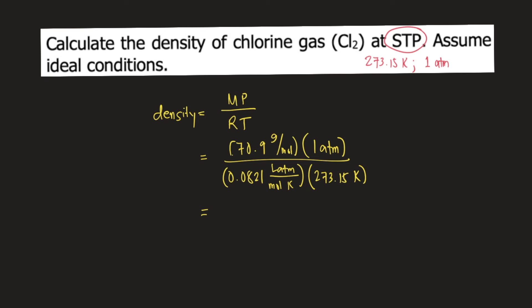Now let's see how the units will cancel. ATM cancels out, moles cancels out, and Kelvin cancels out. So the unit for density would be grams over liters, or grams per liter.